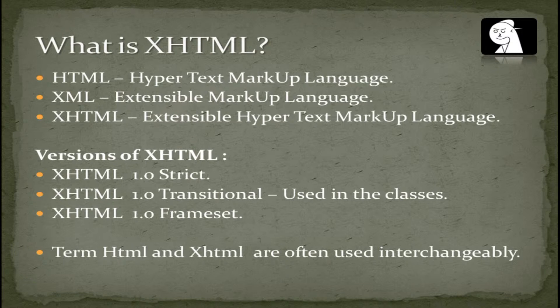Just to make things a little bit difficult when you're getting started with a new technology that might be a little bit scary — especially if you're coming from the graphic design world — XHTML has three different flavors: Strict, Transitional, and Frameset.